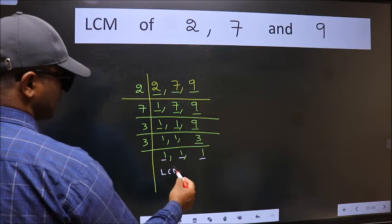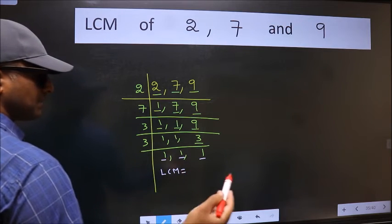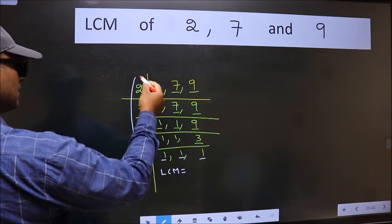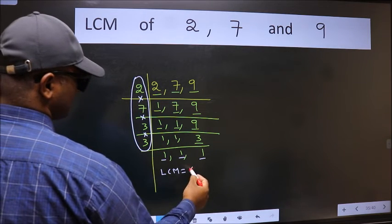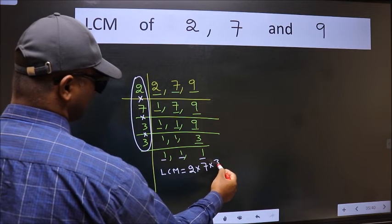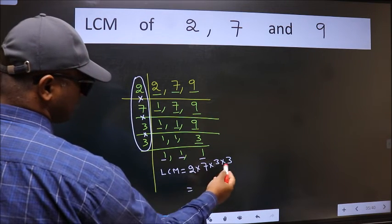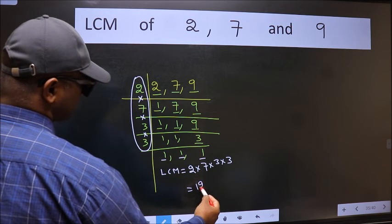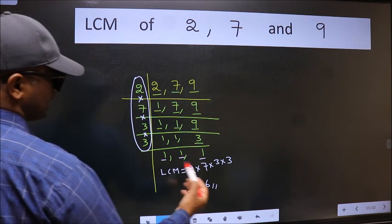So our LCM is the product of these numbers, that is 2 into 7 into 3 into 3. When we multiply these numbers we get 126, which is our LCM.